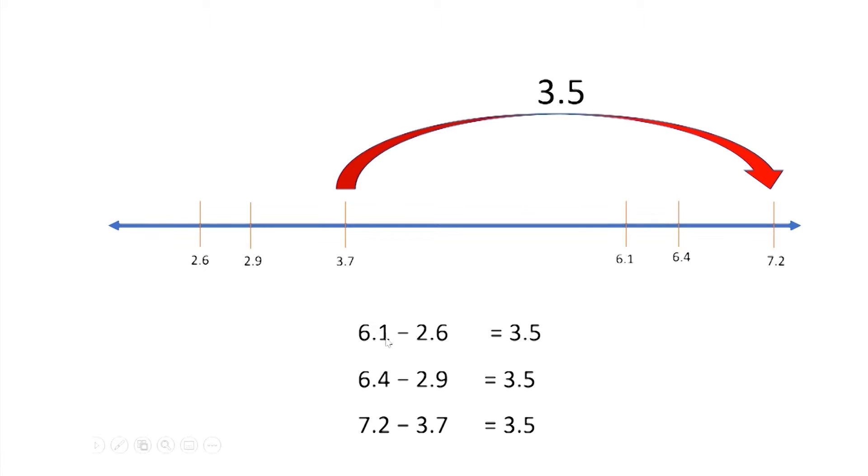So our first problem, 6 and 1 tenth take away 2 and 6 tenths. That was 3 and 5 tenths. And then, 6 and 4 tenths take away 2 and 9 tenths. Also, 3 and 5 tenths. And then, finally, we did 7 and 2 tenths minus 3 and 7 tenths. That was also 3 and 5 tenths. Does anybody notice any patterns between the problems?